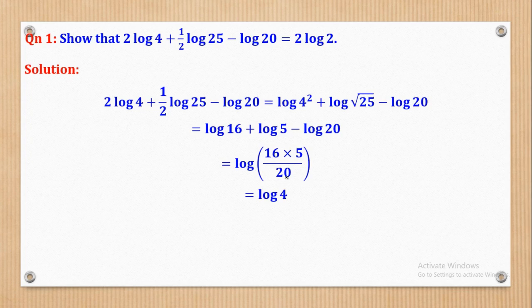When you cancel, 16 over 4 gives 4. Now 4 is the same as 2 squared, so bringing the power down gives 2 log 2.